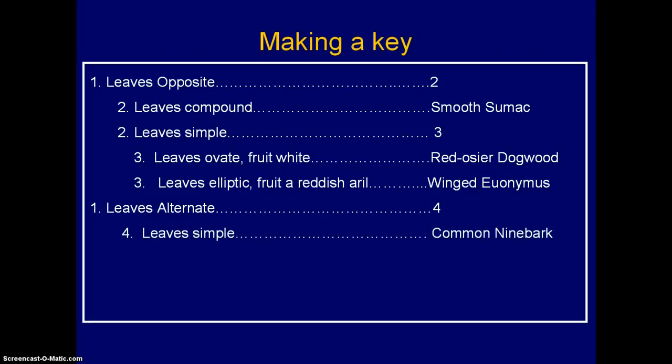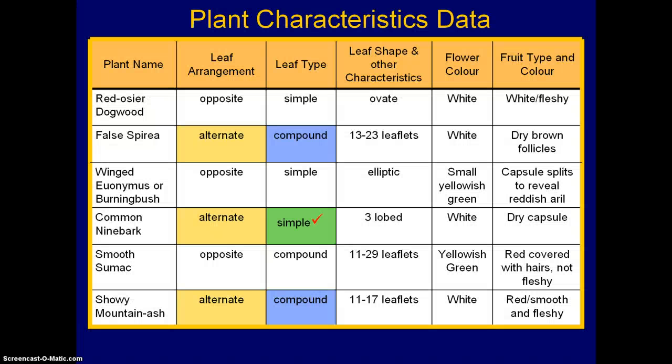The leaves are simple and we know it's going to be common ninebark. The leaves are compound — we still have to make a choice, there are two choices, so we have to go to number 5. So there will be two number 5s to look at.